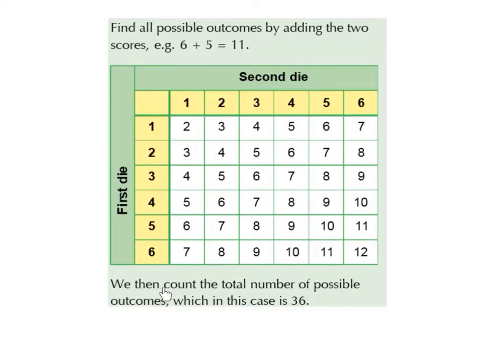We then count the total number of possible outcomes, which in this case is 36. So 6 by 6 gives 36 possible outcomes.